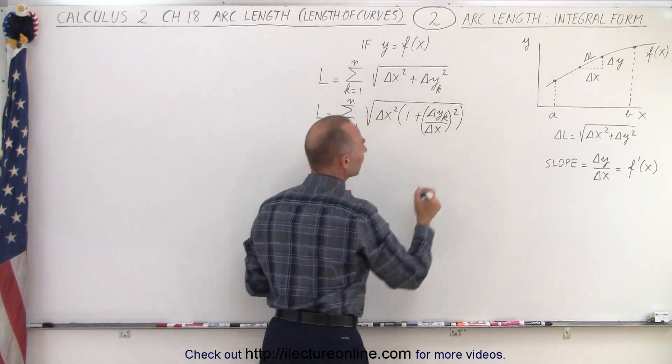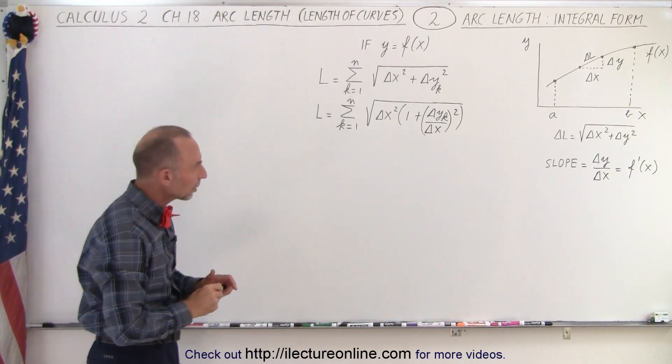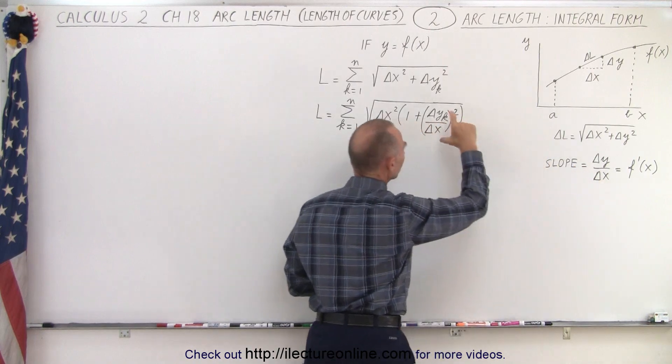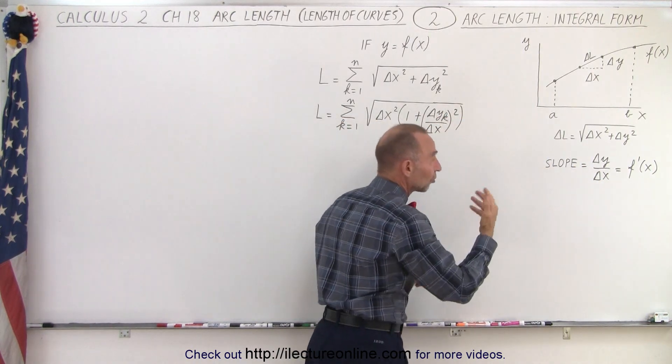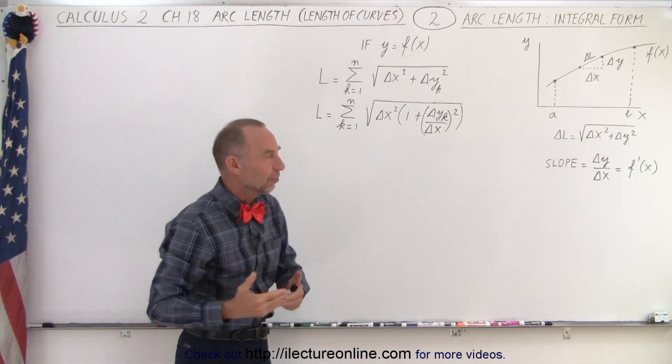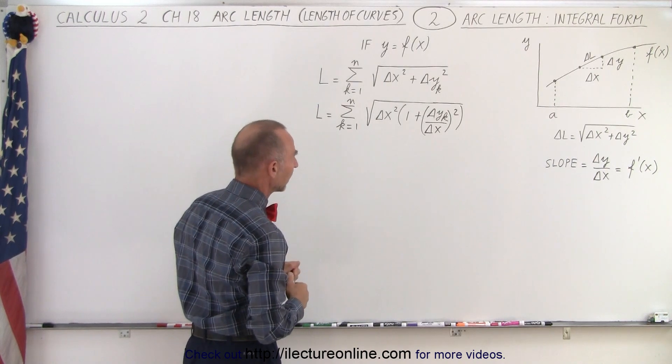And I need another parenthesis. All right, why did we do that? Because we wanted to come up with an expression where we have the slope equals to that and because the slope can be found from any function by taking the derivative that's then going to be the method to find the integral format of the arc length.